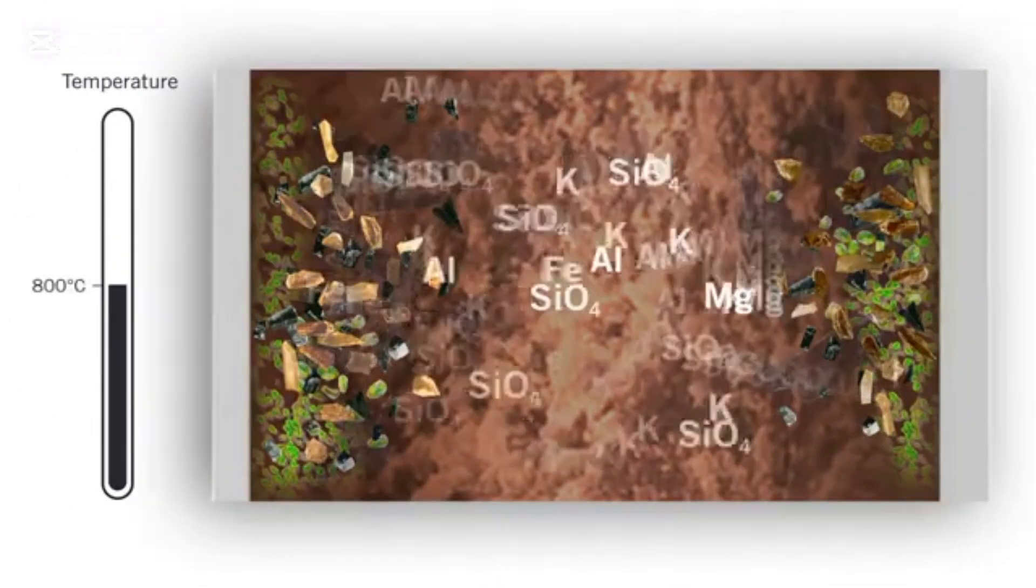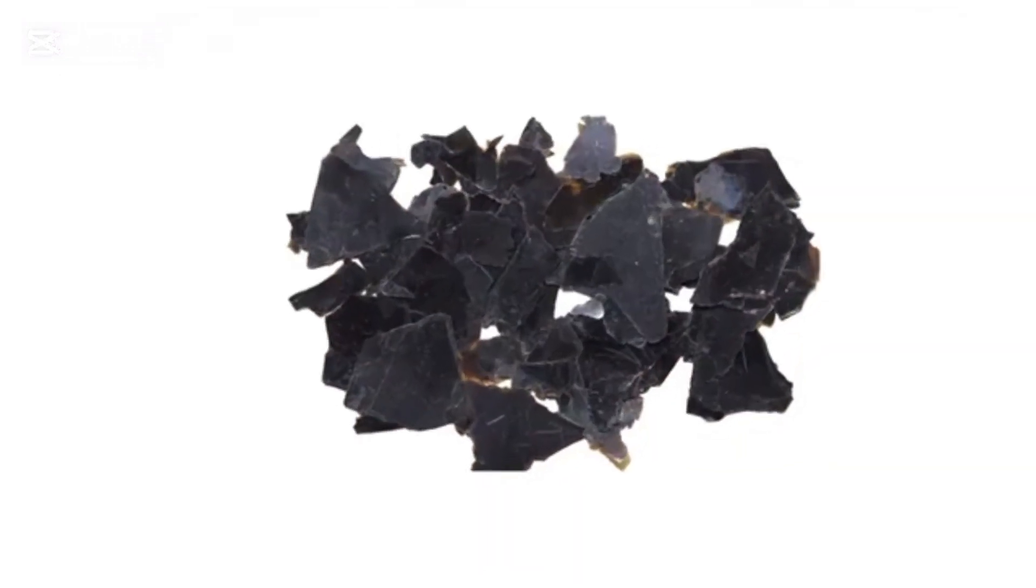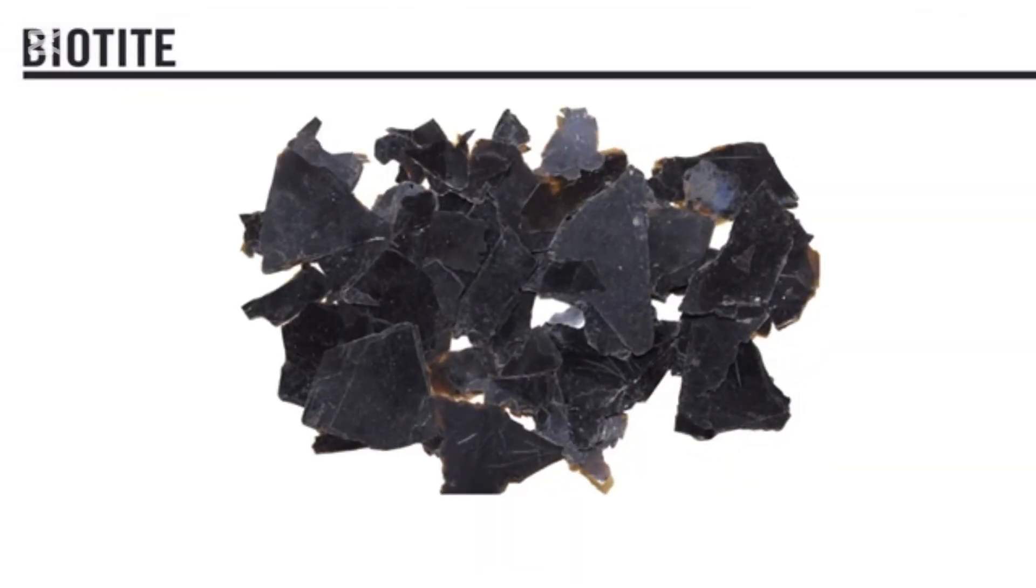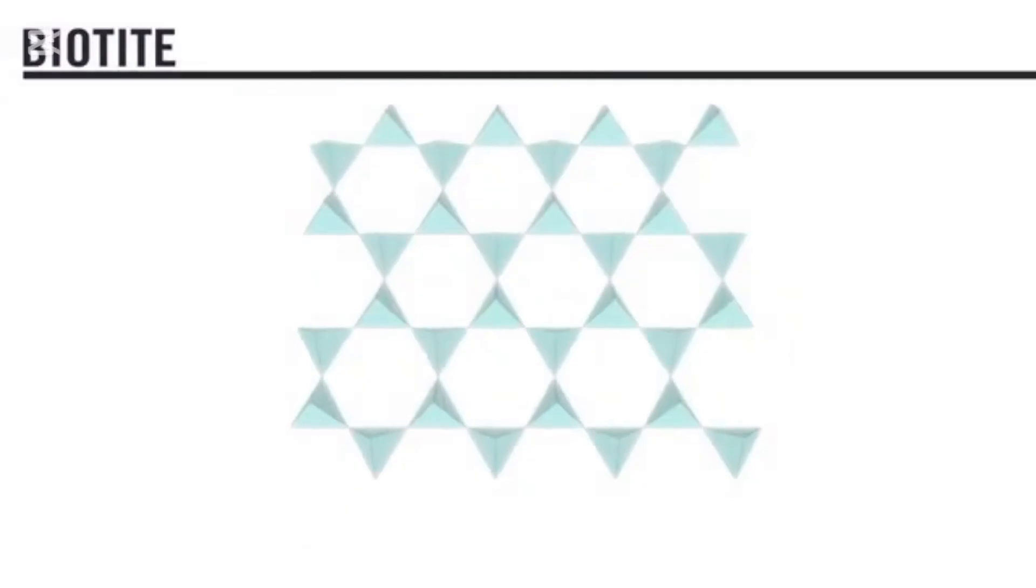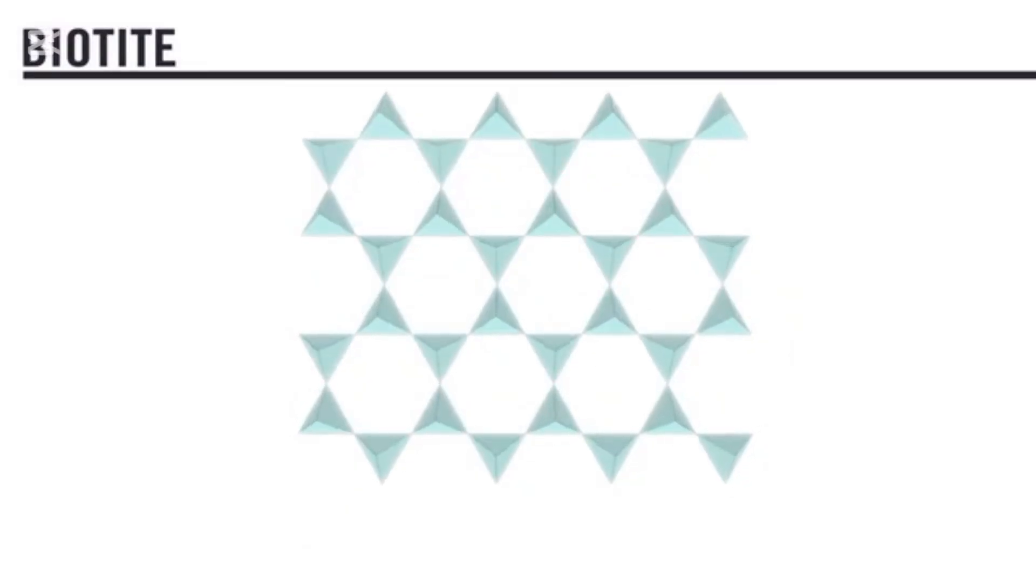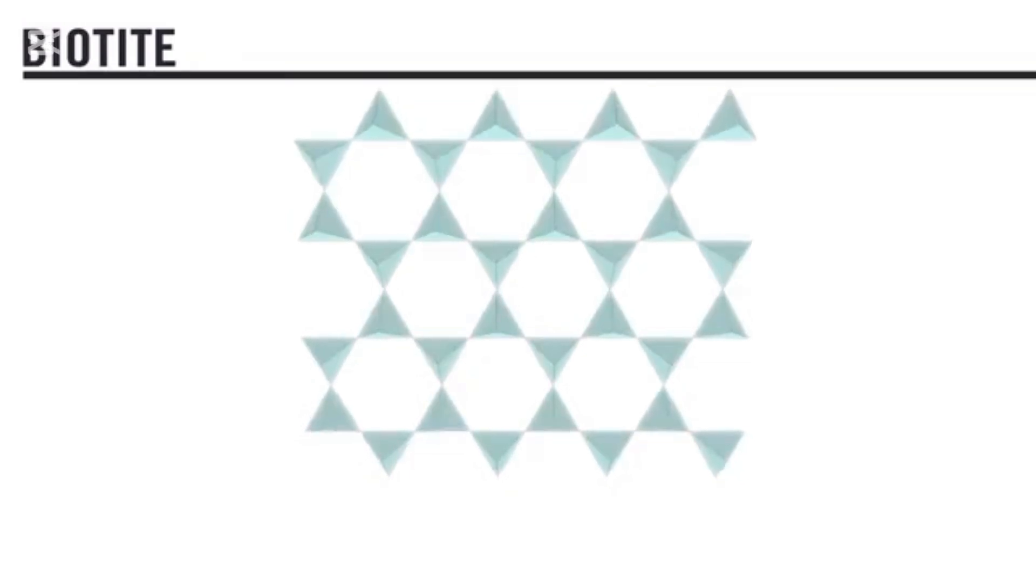Finally, with continued cooling, biotite forms from the elements left in the melt. Biotite contains potassium, aluminum, and silica, and can incorporate any leftover iron or magnesium. Biotite is what geologists call a sheet silicate. Three oxygen atoms within each silicate tetrahedron are shared with neighboring tetrahedra to create a sheet.